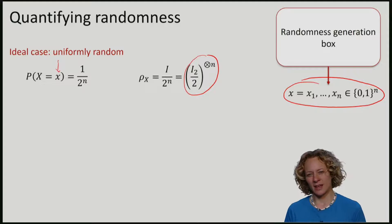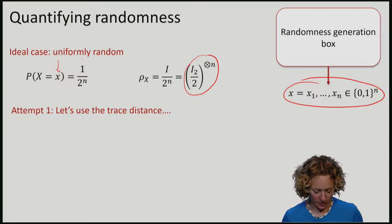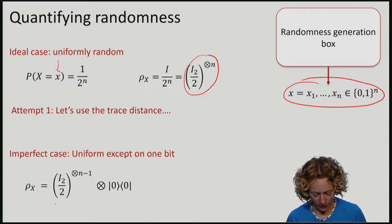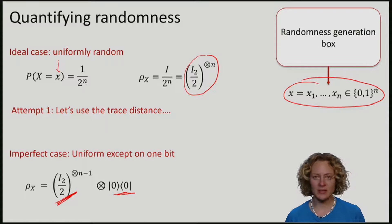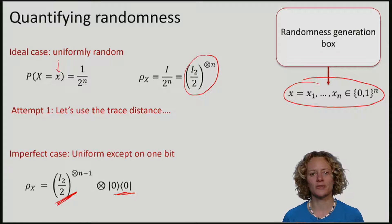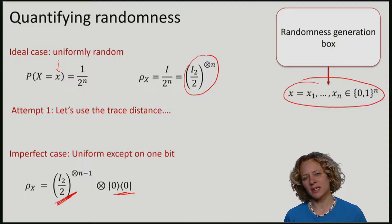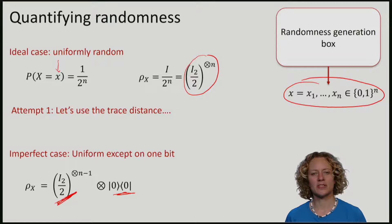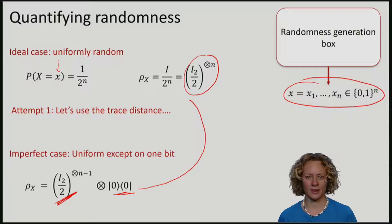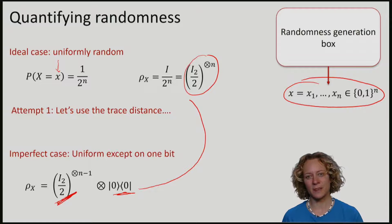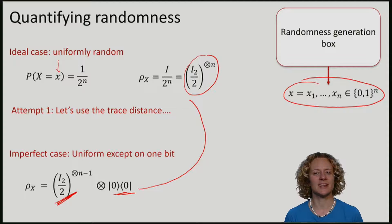Of course, you might say, if I want to quantify the randomness of another state, for example, this one, where I am uniform everywhere except the last bit is always zero, then maybe a useful measure to quantify randomness would just be the trace distance between this situation and the ideal one. The trace distance is very useful in cryptography if we are already very close to the ideal case, epsilon close, where epsilon is so small that it is essentially negligible.